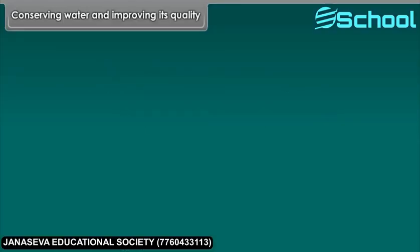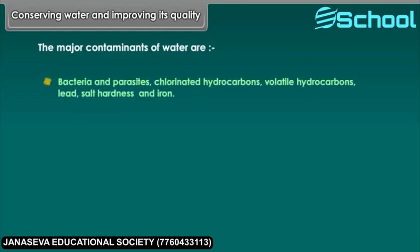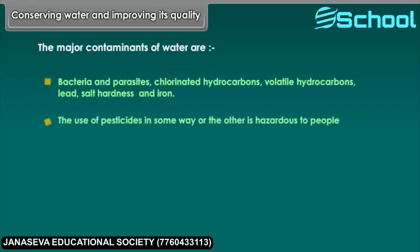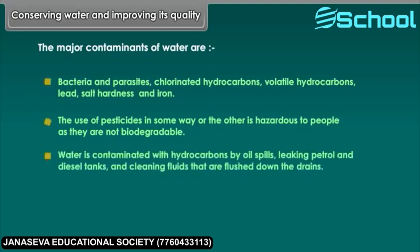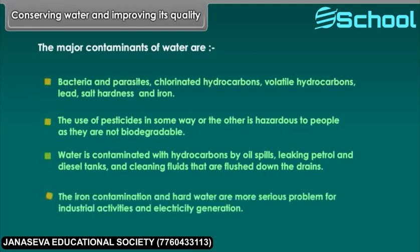Conserving water and improving its quality. The major contaminants of water are bacteria and parasites, chlorinated hydrocarbons, volatile hydrocarbons, lead, salt hardness, and iron. The use of pesticides is hazardous to people as they are not biodegradable. Water is also contaminated with hydrocarbons by oil spills, leaking petrol and diesel tanks, and cleaning fluids flushed down the drains. Iron contamination and hard water are more serious problems for industrial activities and electricity generation.